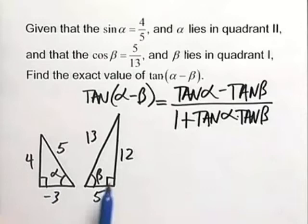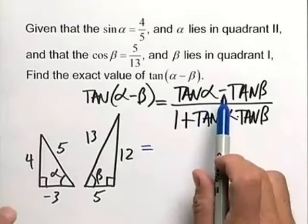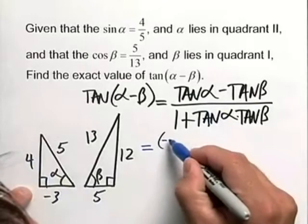For our two particular angles, we have to set up two individual triangles, and from these we can find our exact value. Let's start with the alpha triangle. We need the tangent of alpha, which is opposite over adjacent, and in the numerator here we'll have a negative four-thirds.